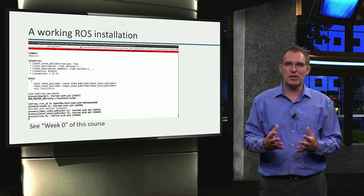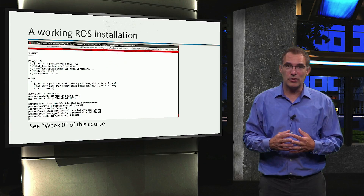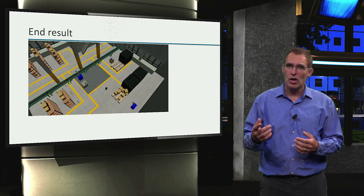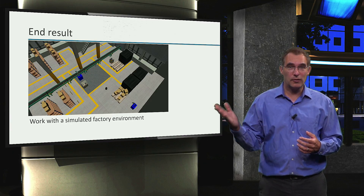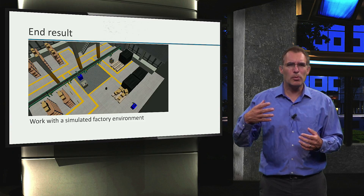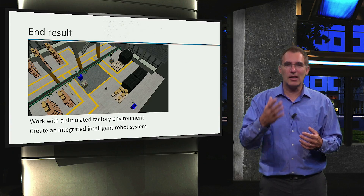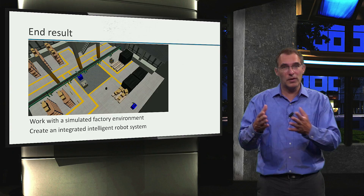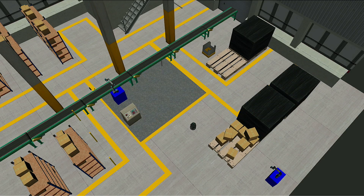Given these prerequisites, you can expect the following end result. After this course, you will be able to work with a simulated factory environment, and you will be able to create an integrated intelligent robot system that can function within this environment. You will get to know this logistics factory that we modified from our open source collaborators at the Southwest Research Institute, which includes a conveyor belt, two industrial robot arms, and a mobile robot.